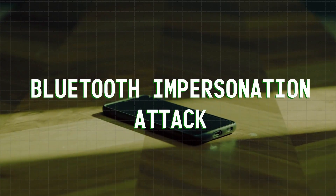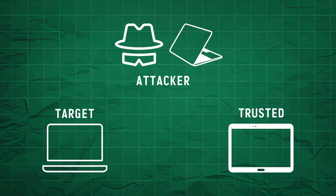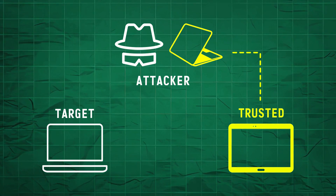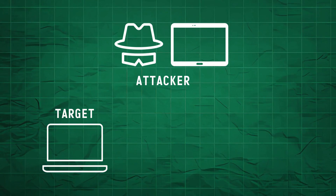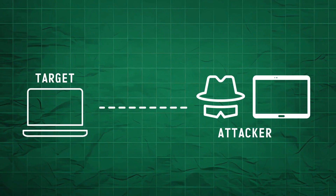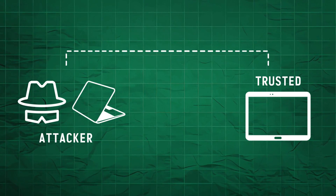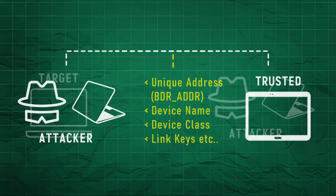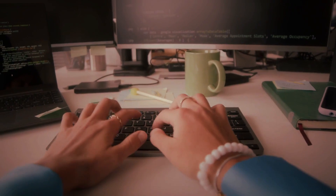Next we have the BIAS, or Bluetooth Impersonation attack. In this type of attack, an attacker basically spoofs their device to mimic the one that the target device has previously connected to, and then poses as that trusted device in order to establish a connection. Note that such an attack can only be executed if the attacker knows all the necessary information about the device they want to impersonate, and whether they can bypass the security checks done by the target device.